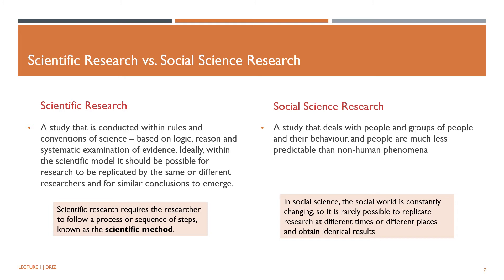Well, yes and no. Social science research deals with people and groups of people and their behavior. And as you know, people are much less predictable than non-human phenomena. Therefore, in social science, the social world is constantly changing, so it's rarely possible to replicate research at different times or different places and obtain identical results. However, the purpose of research is to generate new knowledge, so in that aspect, both scientific and social science research serve the same purpose. Some social science may also engage in scientific method, particularly research in economics and finance, as research in these areas also follows specific rules and uses quantitative methods.